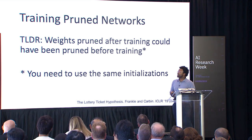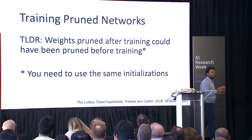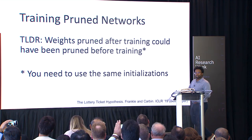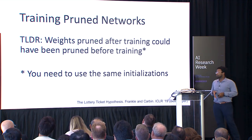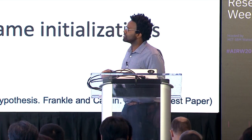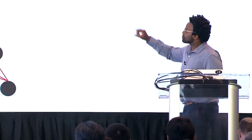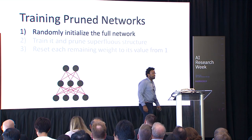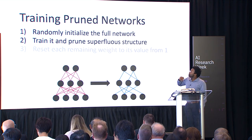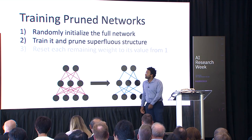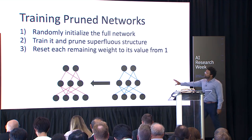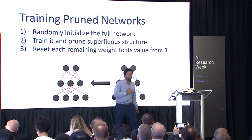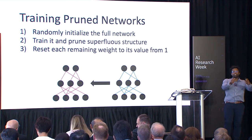The key observation is that weights pruned after training could have actually been pruned before training — that's the basic hypothesis. The critical insight is that you need to use the same initialization. Everything in the current literature shows that if you try to take that small network and reinitialize it, you run into problems. But if you dig inside the large network, you can find very small networks that can train from scratch from the start.